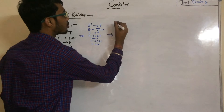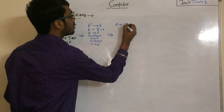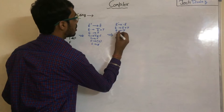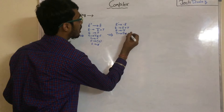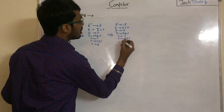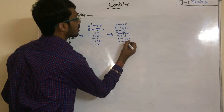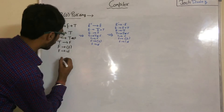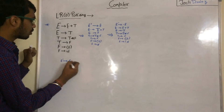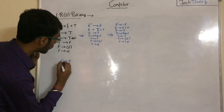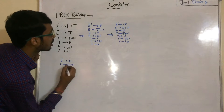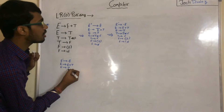We add a dot to the left-hand side of each production, starting from item zero with E' to ·E. After the dot we get a non-terminal, so we add all productions from E: E to ·E plus T and E to ·T.